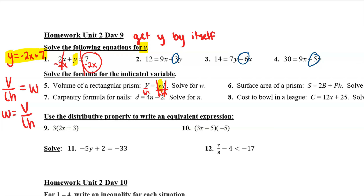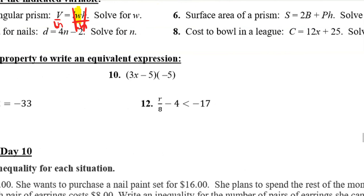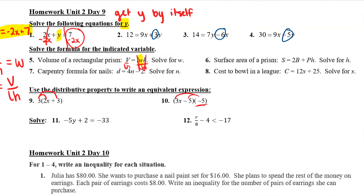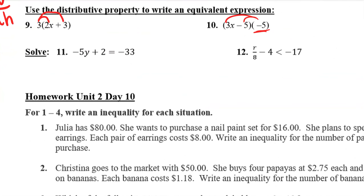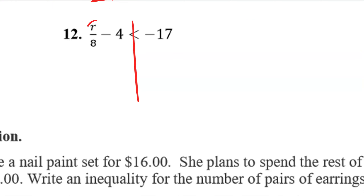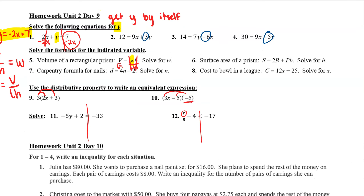Remember, on the rest of those, the goal is to get whatever variable you're solving for by itself. And then number 9, you're just using distributive property — remember, distributive property is just multiplying the number on the outside by the first term, and then also by the second term. Number 10 is the same thing, except it's kind of backward: this needs to get multiplied by the 3x and then also by the negative 5. And then the last two are just solving. The goal is to get y by itself, so you need to move away the 2 and the negative 5 — move the 2 first. Same thing on this one: the goal is to get r by itself, so we need to move away the negative 4 and the 8. Remember, you only have to flip the inequality if you multiply or divide by a negative.